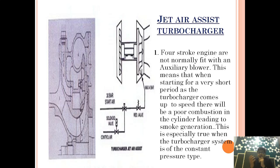In ECA areas (Emission Control Areas) or in other developed countries, they don't like black smoke coming from the exhaust trunk. By means of this jet air assist turbocharging system, we are reducing black smoke generation.